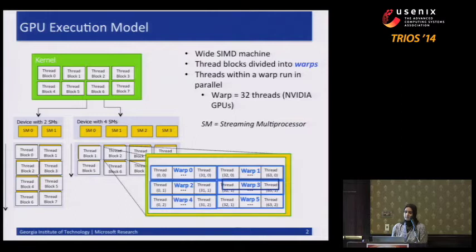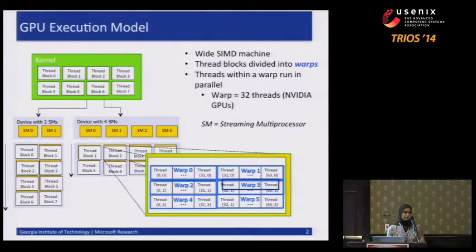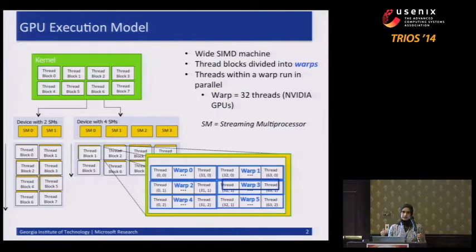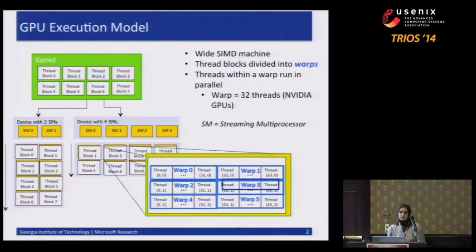Thread blocks are further divided into warps. A warp in NVIDIA terminology can be thought of as the smallest schedulable entity on the GPU. Threads within a warp run in parallel and lockstep fashion. This background is important when I talk about some of the optimizations.